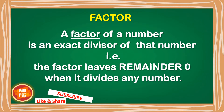Let us firstly learn about the definition of a factor. A factor of a number is an exact divisor of that number. Exact divisor means that whenever you divide that number by its factor, the remainder is always 0. So whenever we divide a number by its factor, the remainder is always 0, and if the remainder is 0, that means that particular number is a factor of the given number.